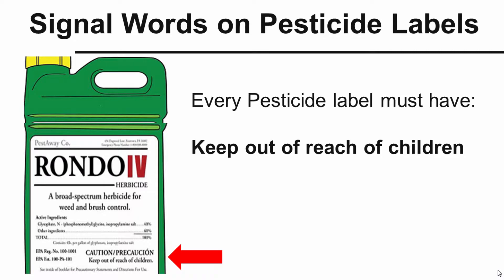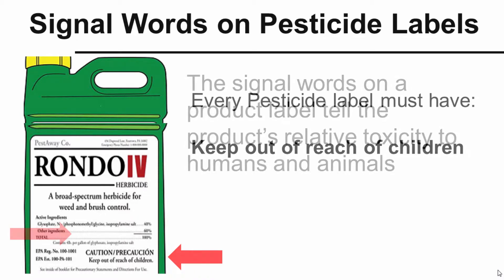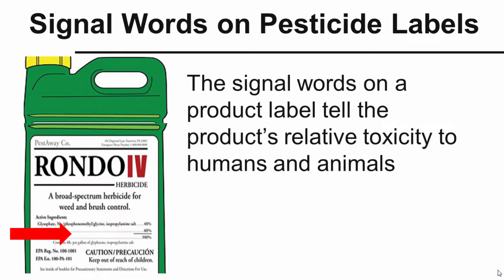Also, EPA requires that every pesticide label must have 'Keep Out of Reach of Children.' All pesticides are a poison to a certain extent, and certainly children are the most vulnerable to any kind of poison. The signal word on the product label is going to tell us the product's relative toxicity to not only humans, but also to animals.